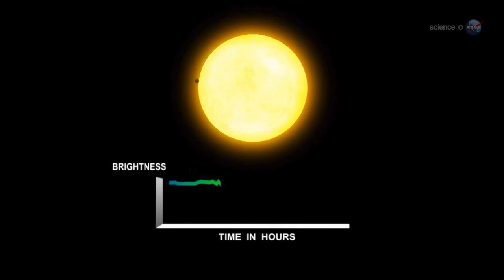Kepler works by looking for the slight dimming of starlight caused when a distant planet transits its parent star. Any dip in stellar brightness attracts the attention of the Kepler team and can prompt them to declare a planet candidate.